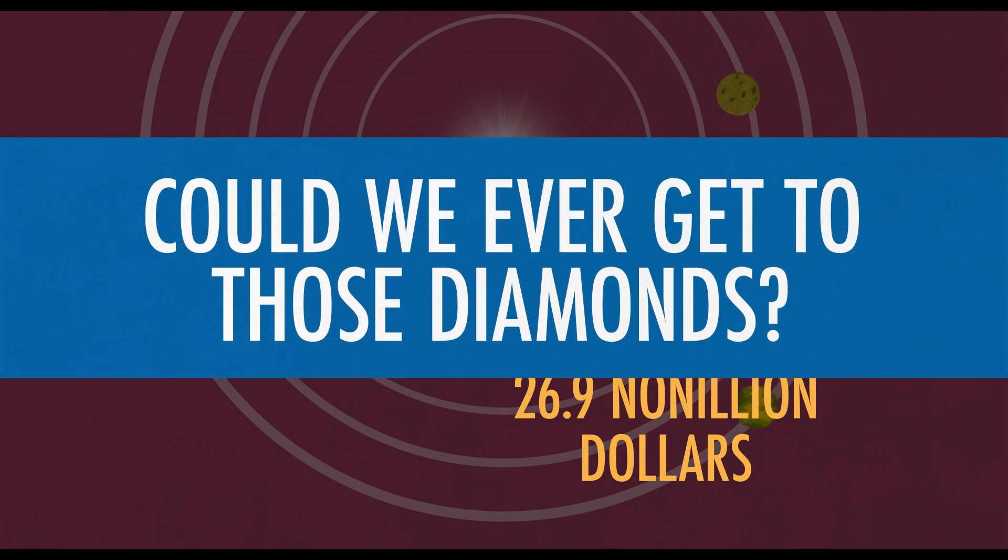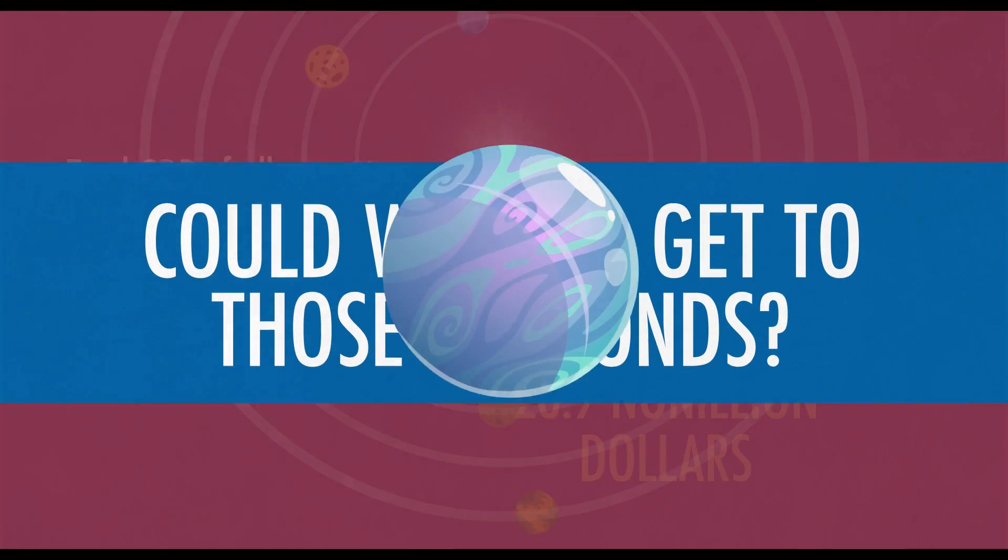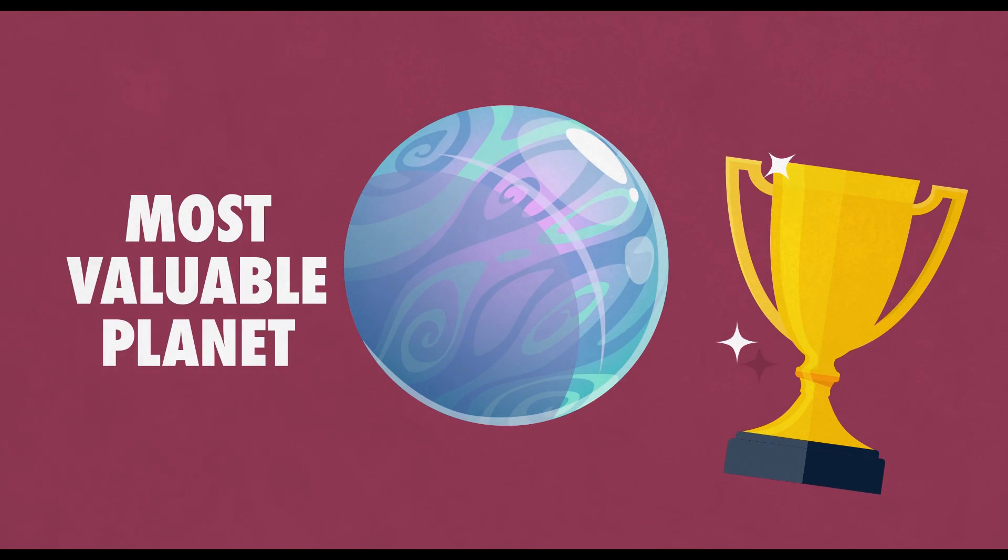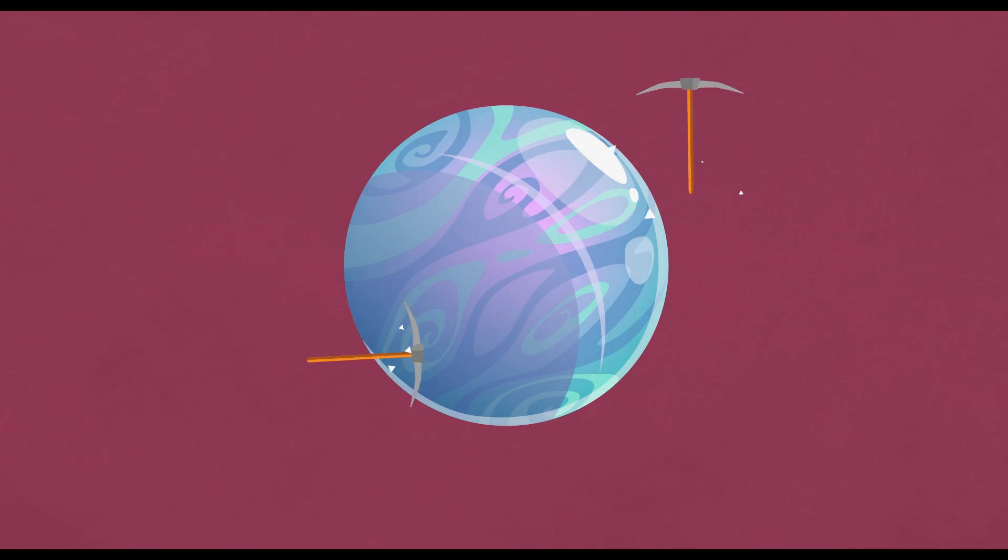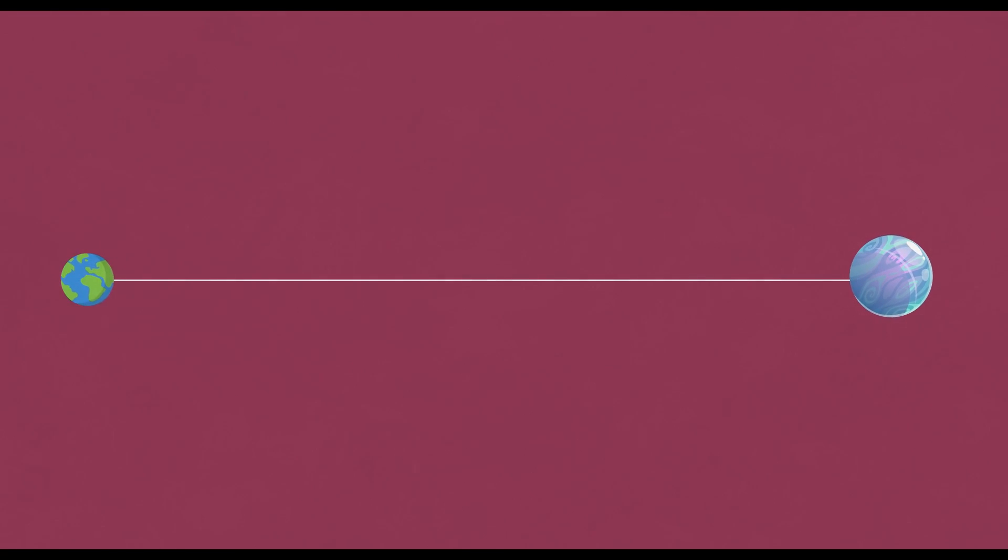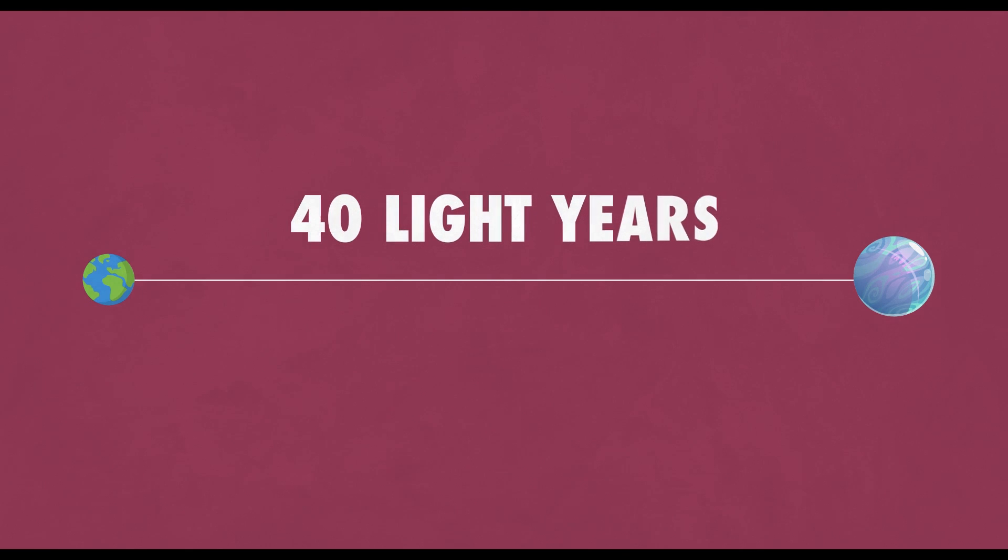So you might be wondering, could we ever get to those diamonds? 55 Cancri e is without a doubt the most valuable planet that has ever been discovered so far, but it'll be a long time before we could even dream of mining it. While it's relatively close to us in terms of the vastness of the universe, 40 light years is still an enormous distance to cover.